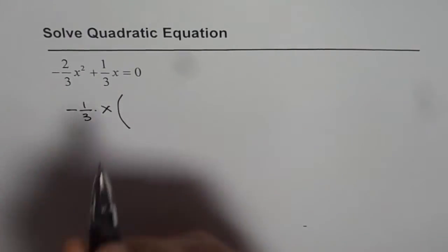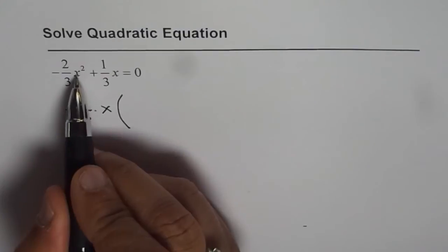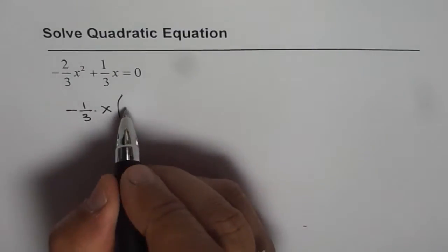So what do we get after this? If I factor out x, I get x from here and 2, so 2x.